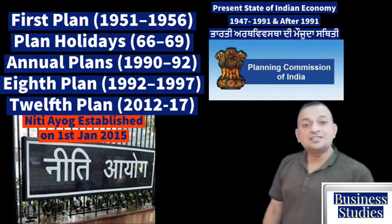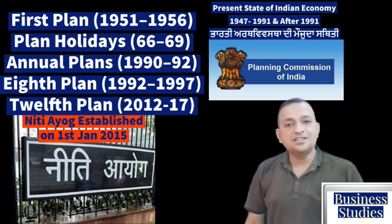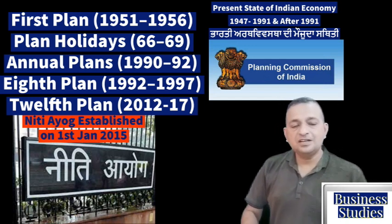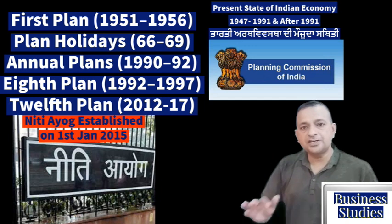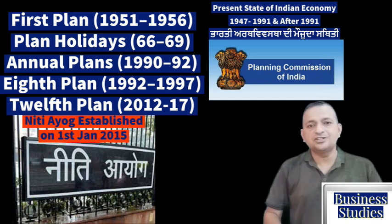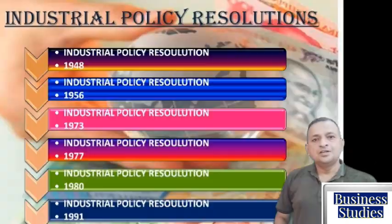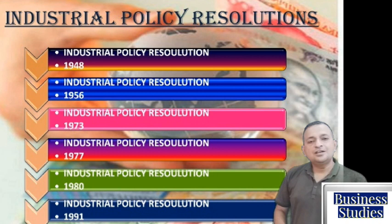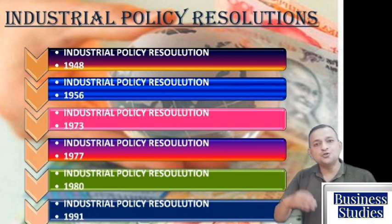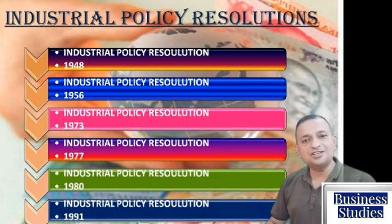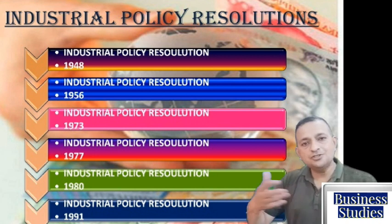The government also created new community programs. Industrial policies were changed multiple times — in 1950, 1973, 1980, and 1991 — each time aiming to steer the country toward greater self-sufficiency and economic growth.